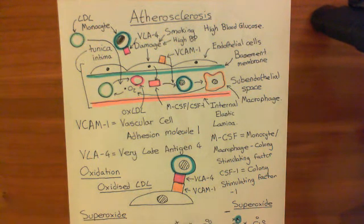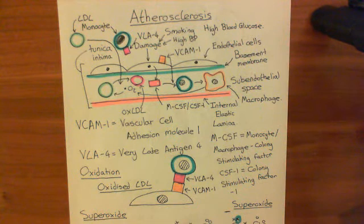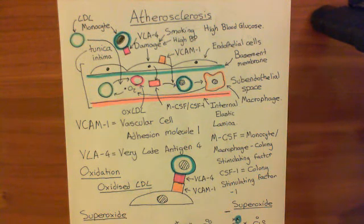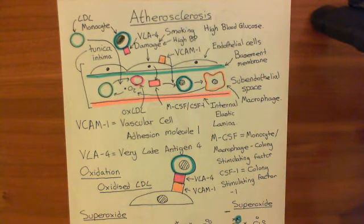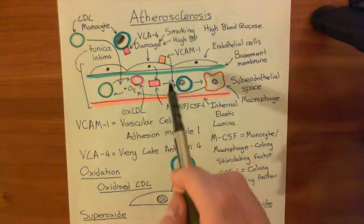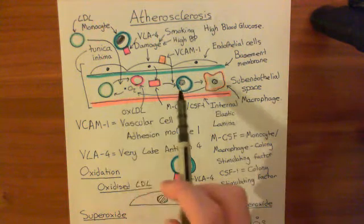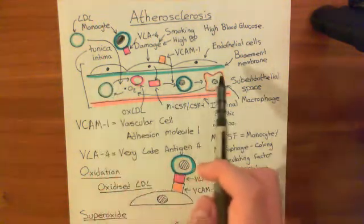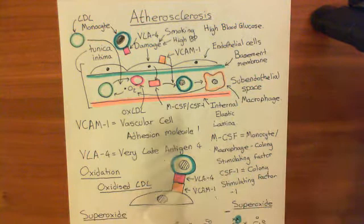That causes these endothelial cells to start putting the signaling molecule VCAM1 — vascular cell adhesion molecule 1 — on their surface. That causes monocytes in the bloodstream, which is a type of white blood cell, to bind to the VCAM1 because they have a complementary protein known as very late antigen 4, or VLA4, on their surface. They bind and then move across the endothelium, between the gaps of the endothelial cells, into the subendothelial space — the space between the basement membrane and the internal elastic lamina.